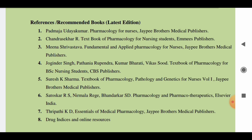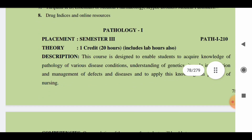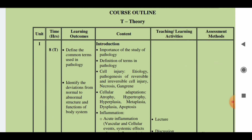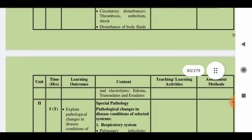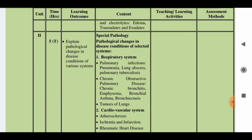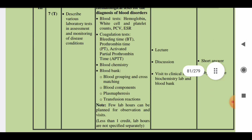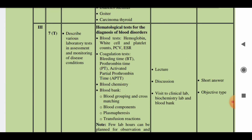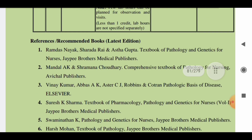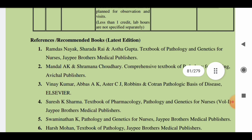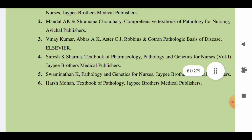The books listed in the syllabus are recommended for Pharmacology. For Pathology, you have 20 hours — that is one credit hour — and it is also a very important subject. The first unit covers introduction, the second unit covers pathological changes in diseases across various systems, and the third unit covers hematological tests used for blood disorders. Recommended books include Ramdas Naik, Mandeleke, Vinay Kumar, and Sureshke Sharma.